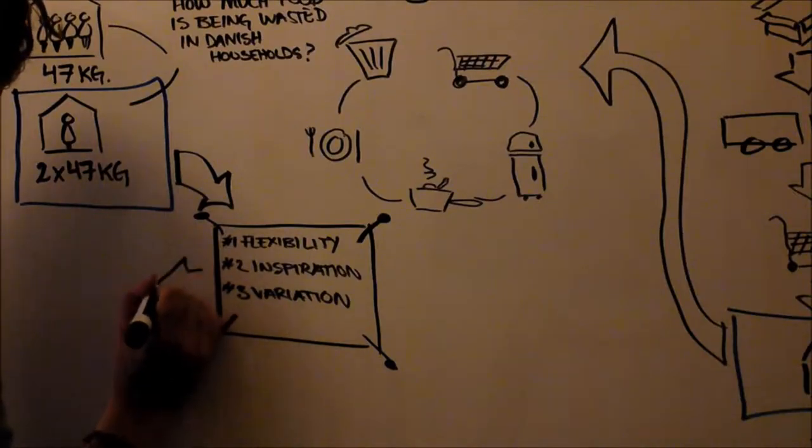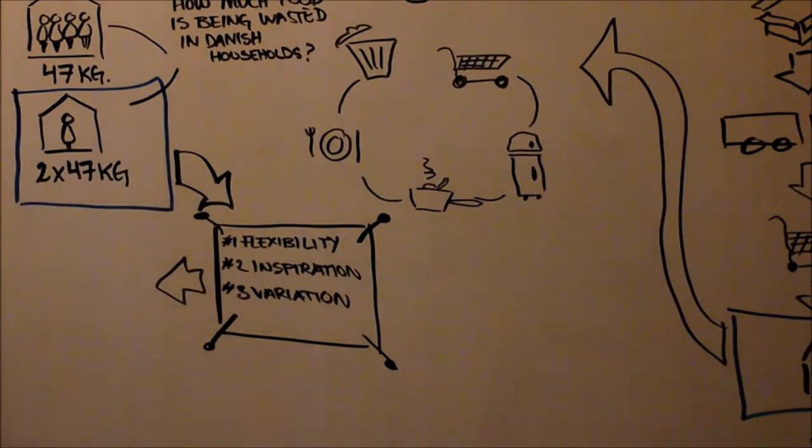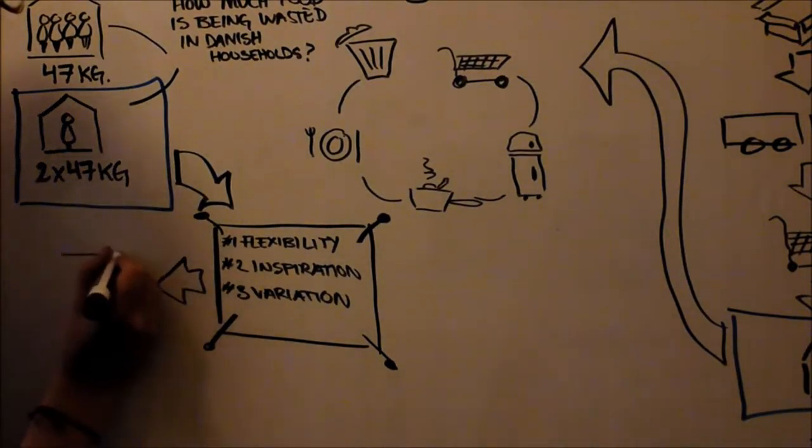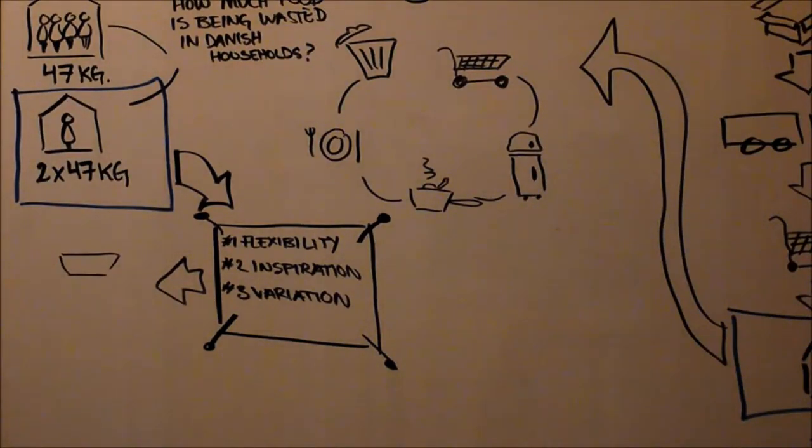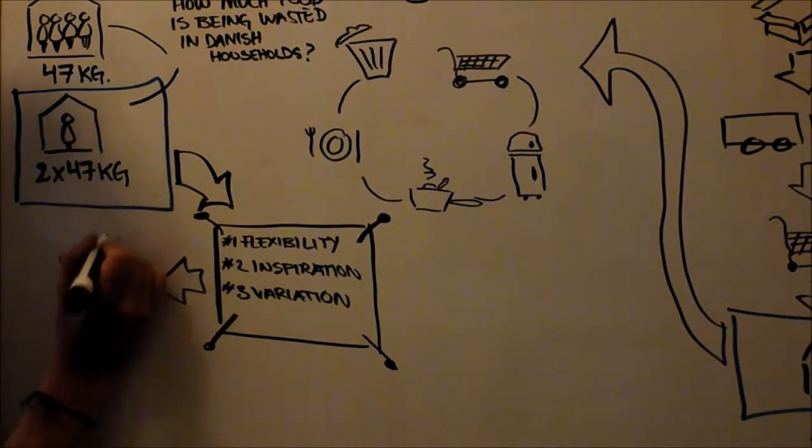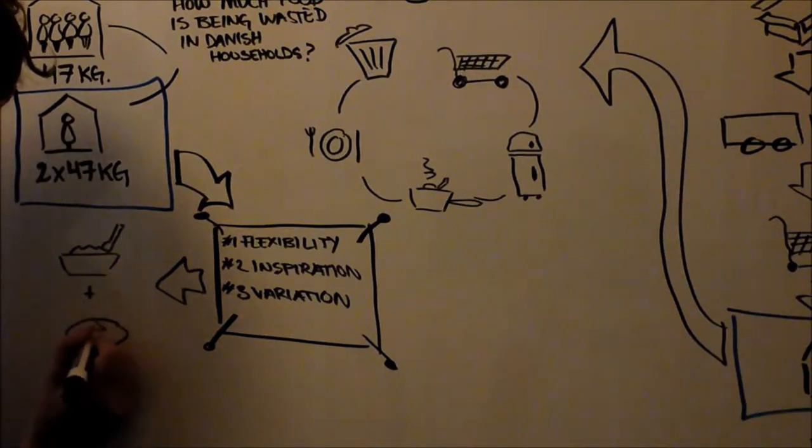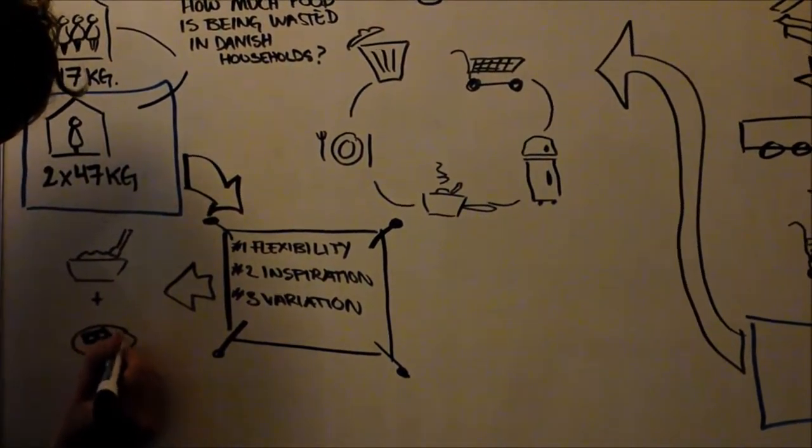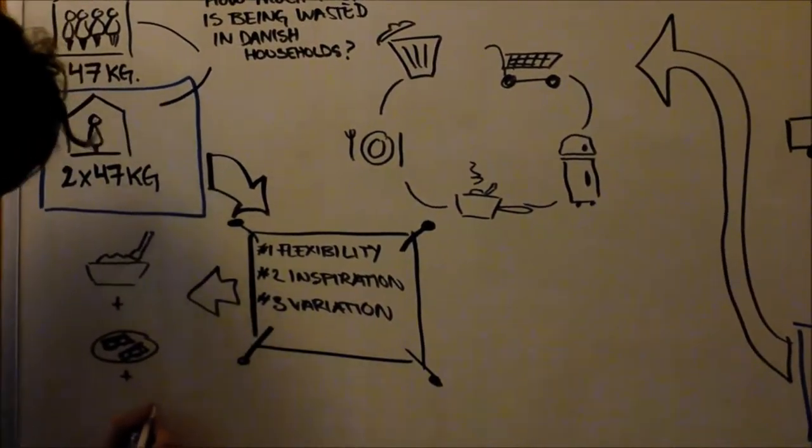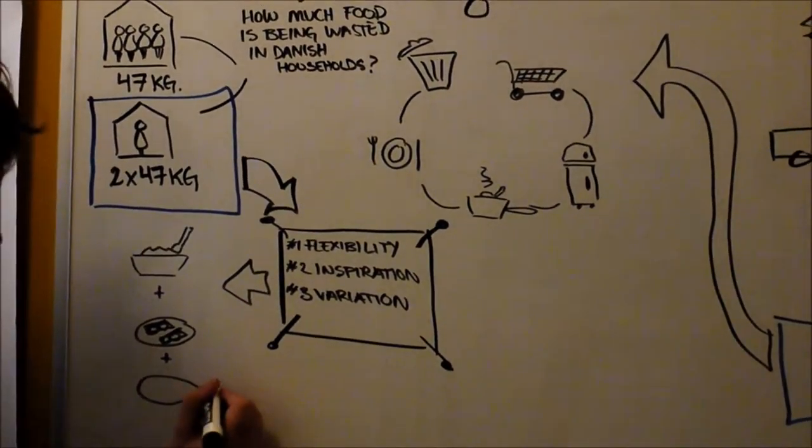The last is variation. The students want variation in their food, both for health reasons and because it gets boring eating the same dinner every night. What's interesting is that students don't need variation in every meal. Breakfast and lunch are usually based on routines, and students know what to buy and how to use it.